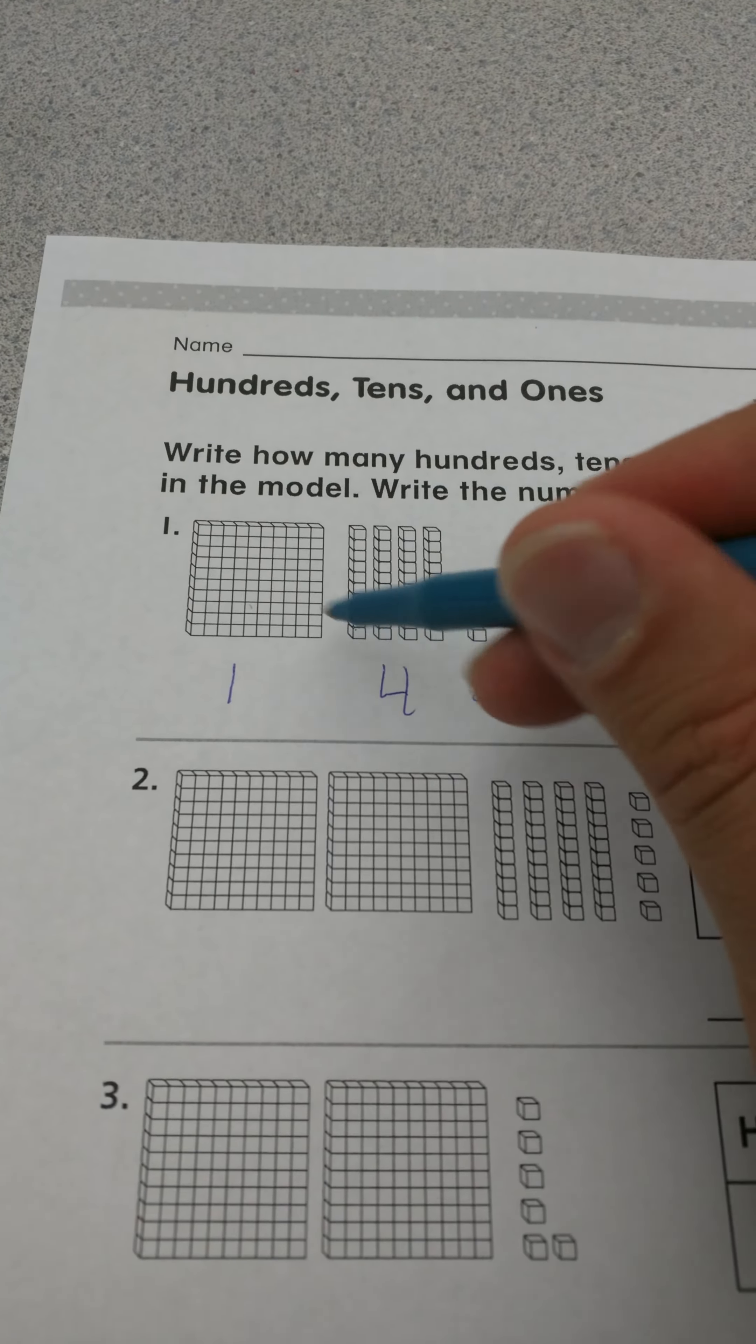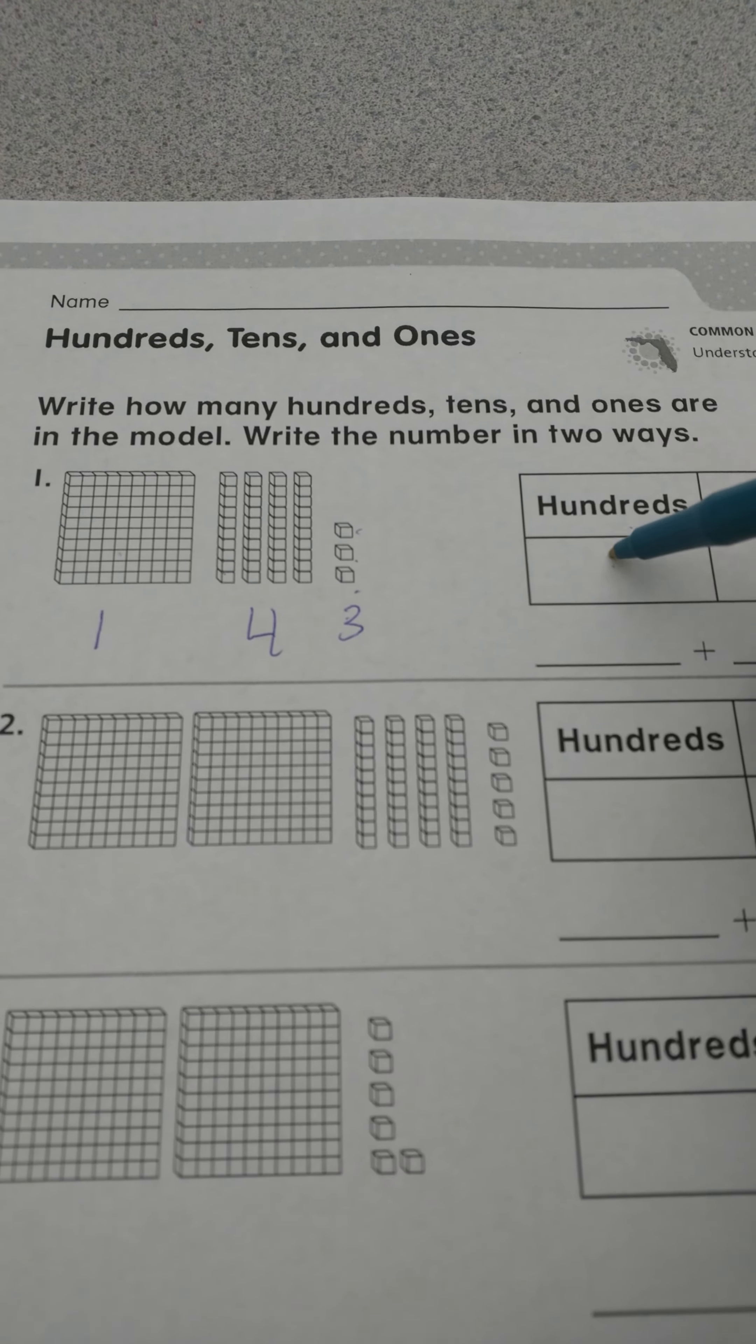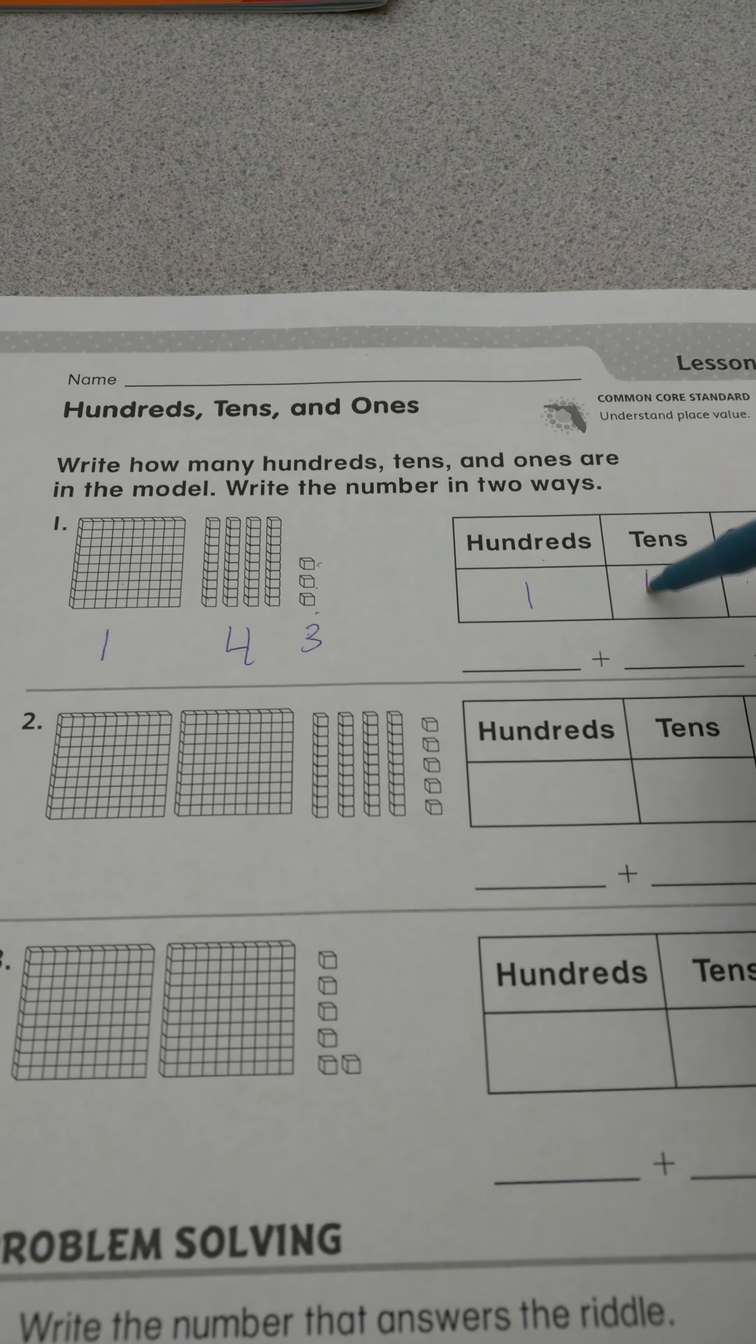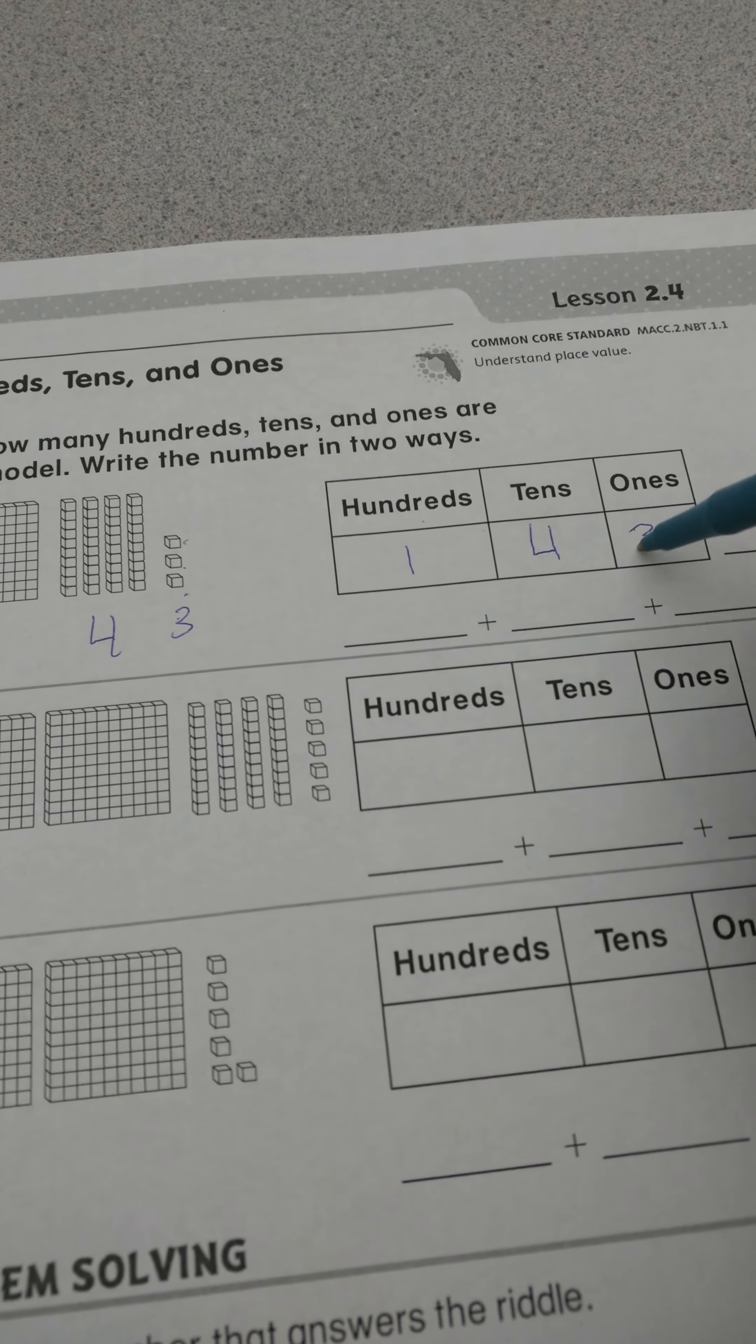So that just kind of gives me an idea, boom, I know what I'm doing here. So I'm basically going to transfer those numbers here of 1 hundred, 4 tens, and then 3 ones here.